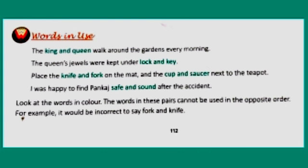King and queen is an example of a word pair that is always used in that order. In other words, these word pairs cannot be used in the opposite order. For example, it would be incorrect to say fork and knife.